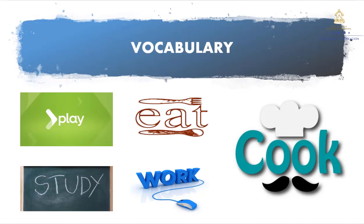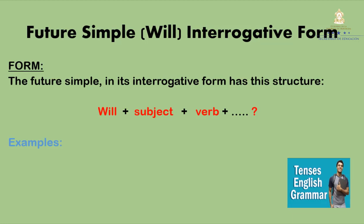In the future simple, as I said at the beginning, the future simple in the interrogative form is used to ask about predictions, beliefs, or intentions about the future. I need you to remember this structure: will, plus subject, plus verb, plus complement, and at the end, the question mark. Don't forget — always start the sentence with a capital letter and finish with the correct punctuation mark, in this case the question mark.